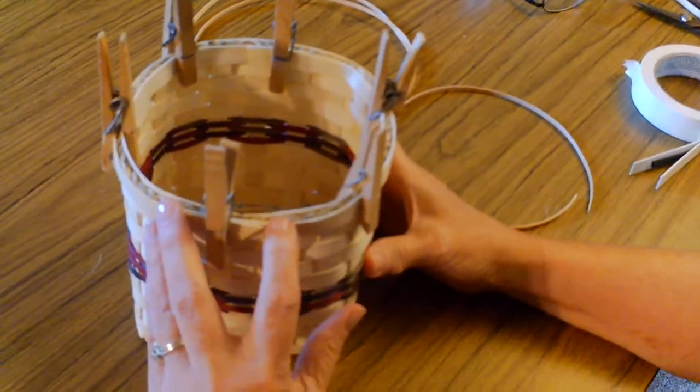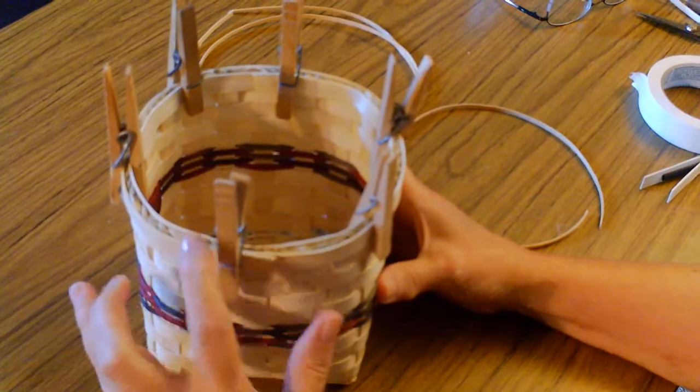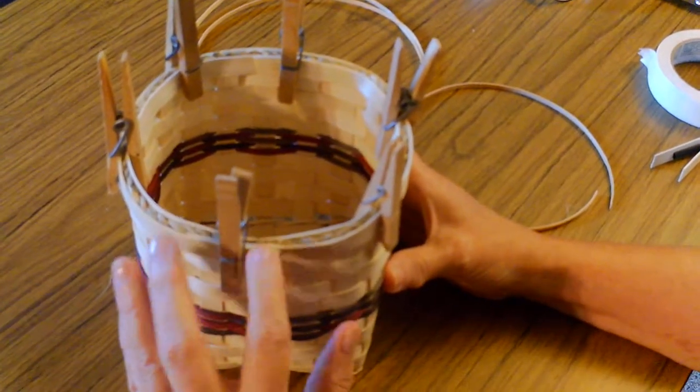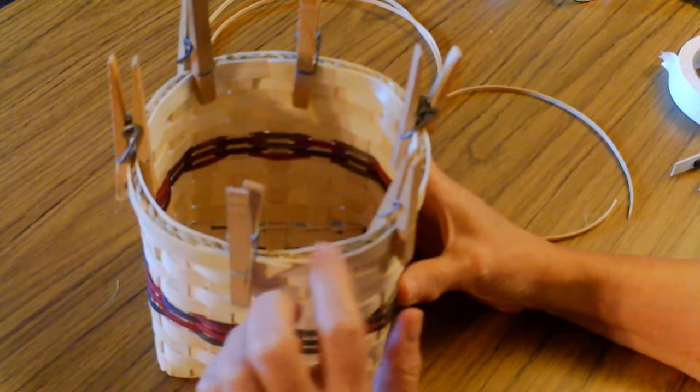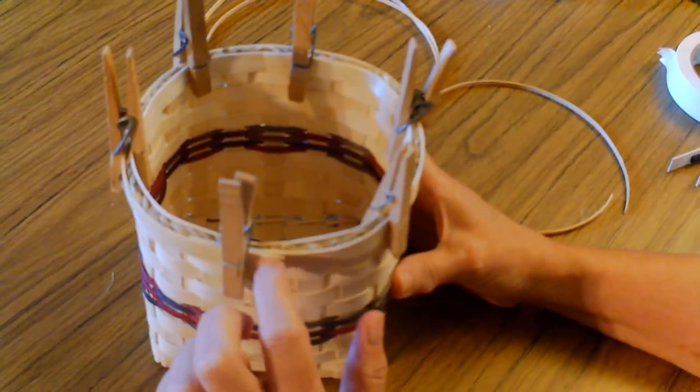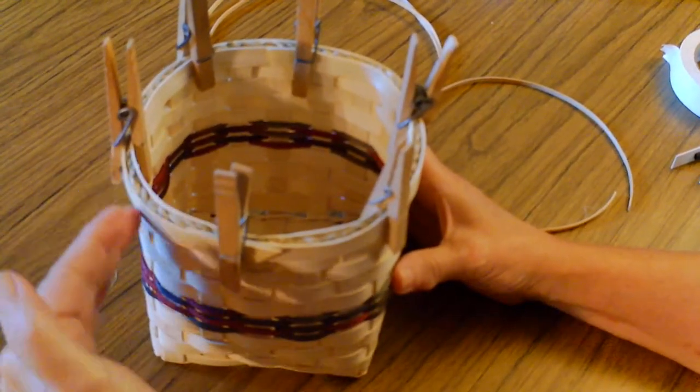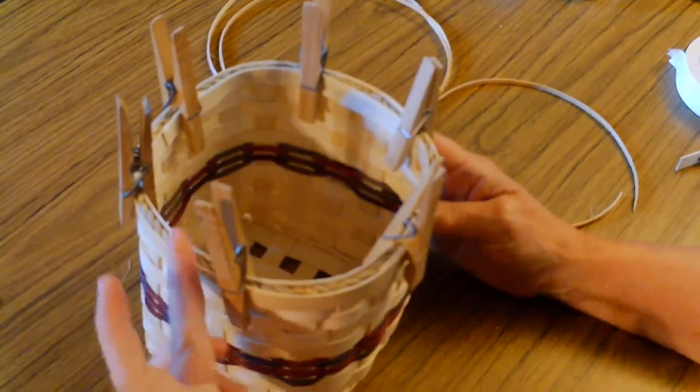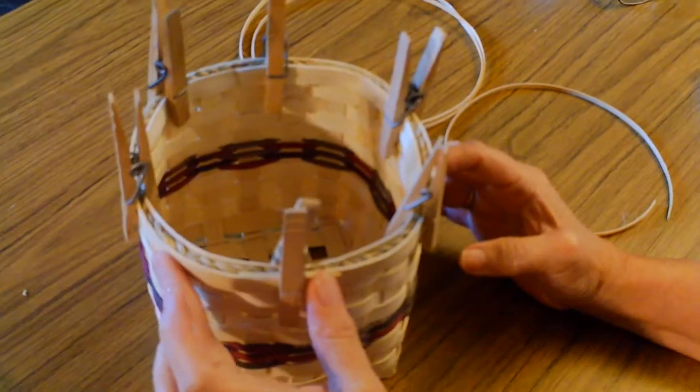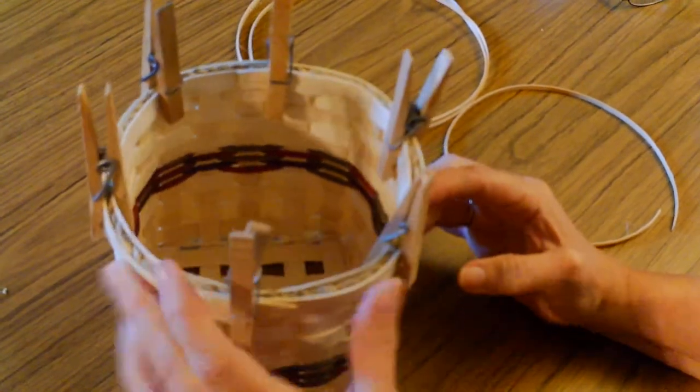When deciding where to start the lashing, you look and see where this overlap is, because as you go around the basket lashing very tightly, this rim can move. I would not want to start on this side because I would cover this up and then I'd be stuck and would end up with a gap.